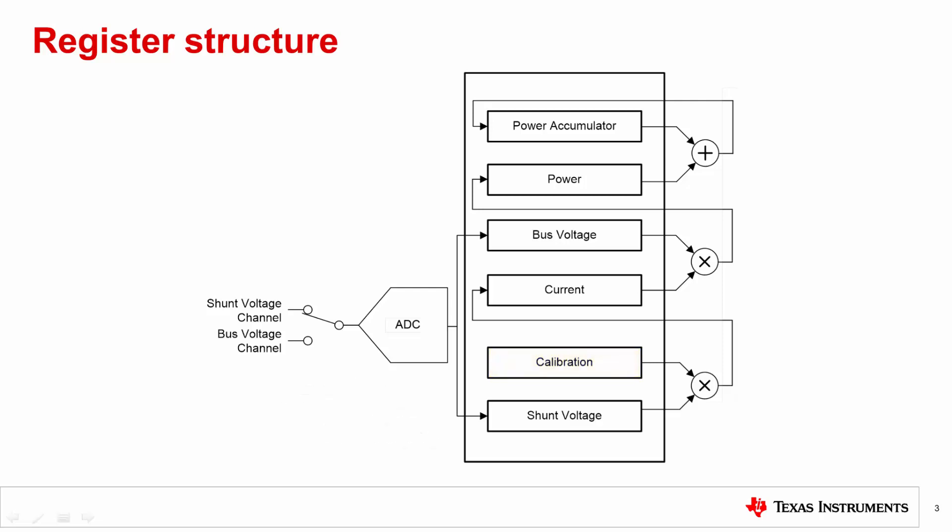There is no programming needed if you only require shunt and bus voltage measurements and do not need direct current and power readouts. If direct current and power readings are required, then the calibration register must be programmed. The current register is obtained by multiplying the contents of the shunt voltage register and the calibration register, then dividing by a constant for scaling purposes. The power register is obtained by multiplying the contents of the current register and the bus voltage register contents, then also scaling by a constant.